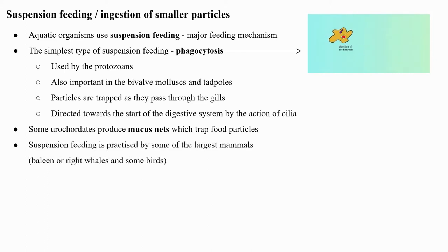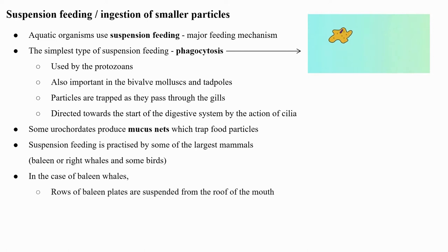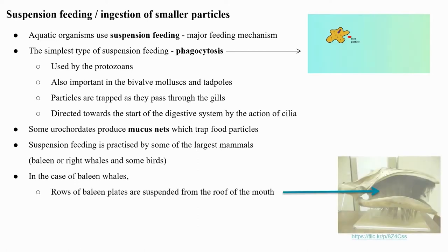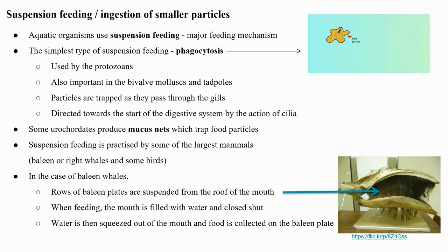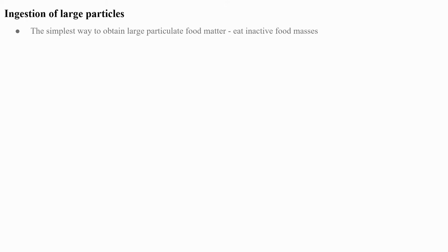Suspension feeding is practiced by some of the largest mammals such as baleen or right whales and some birds. In the case of baleen whales, rows of baleen plates are suspended from the roof of the mouth. When feeding, the mouth is filled with water and closed shut; water is then squeezed out and food is collected on the baleen plates. This process is also called filter feeding.